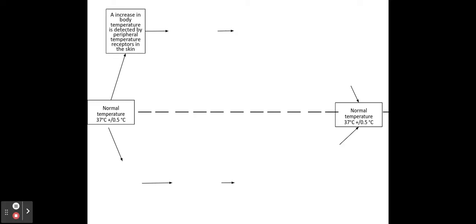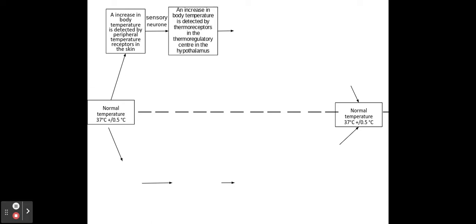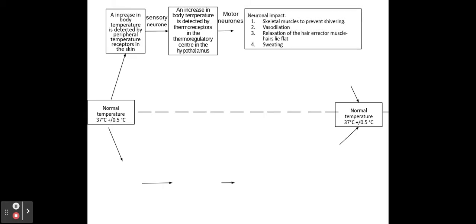An increase in body temperature would be detected by peripheral temperature receptors on our skin, and an impulse will be sent to our thermoregulatory centre within the hypothalamus. Through motor neurons this can have two different impacts. The neural impact would be to stop our muscles from shivering, because shivering and contracting generates ATP and heat. We'd also have vasodilation where blood flows closer to the skin to release heat via radiation, relaxation of the hairs so we don't trap an insulating layer of air, and we would also start to sweat.